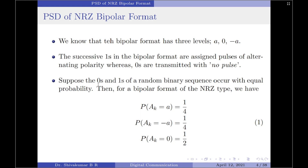The probability of occurrence of symbol 0 equals the probability of occurrence of symbol 1. Since we have symbol 1 representing two amplitudes alternatively — A as well as minus A — the probability of amplitude A_k equals A is 1/4. Similarly, the probability of A_k equals minus A is also 1/4. The probability of A_k equals 0 is equal to 1/2.